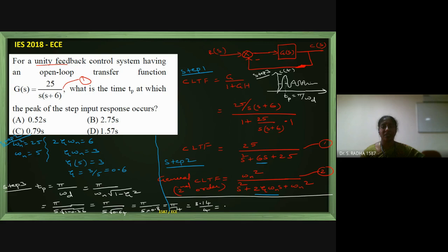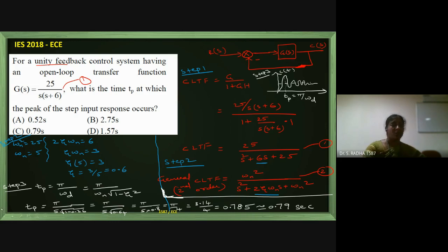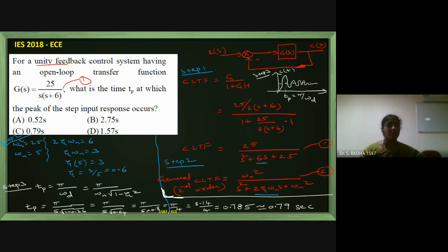Calculating: tp = π/4 = 3.14/4 ≈ 0.785, approximately 0.79 seconds. The units are seconds since it is a time measurement. Option C (0.79 seconds) is the correct answer.